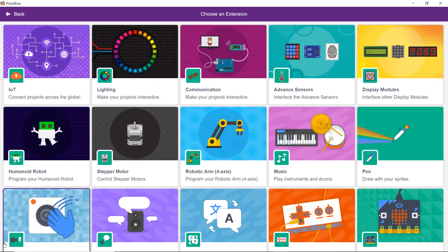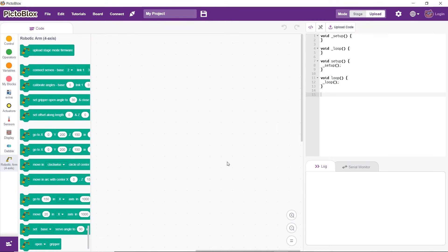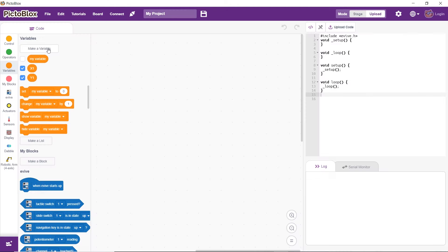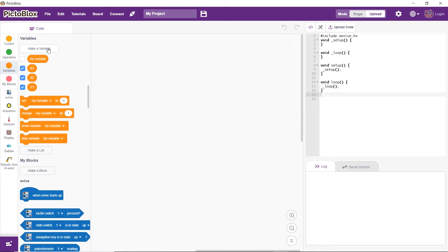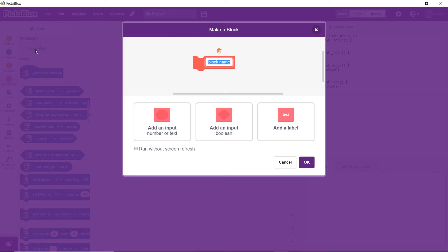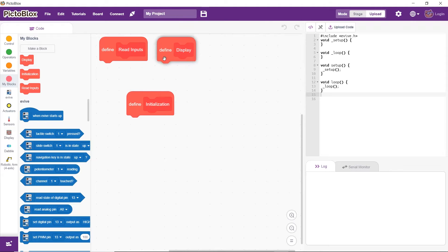To create a script, we must add the robotic arm extension. First, let's make 4 variables x1, y1, x2 and y2 for storing the values from the joysticks and 2 more for the time and division factor. Next, make 3 custom blocks for reading inputs, initializing and using evive's display.